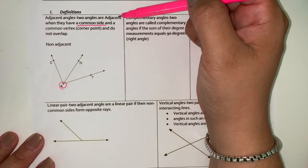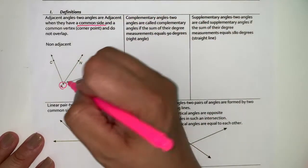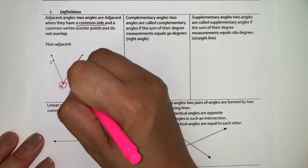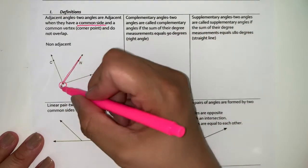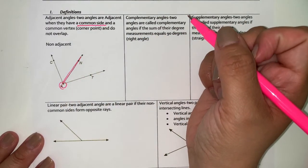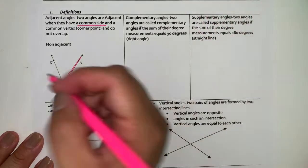Adjacent angles are two angles that are adjacent and have a common side. They have a common side and a common vertex and do not overlap. So let's talk about what adjacent is.